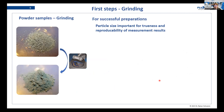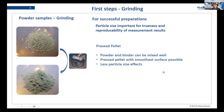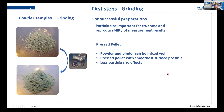First, we need to make sure that the particle size of our sample is fine enough to do either of the preparations. Grinding is a very important step for successful preparation. The particle size is very important because it will affect the trueness and also the reproducibility of your measurement results. For pressed pellets, it has some advantages to grind the slag to become a very fine powder.